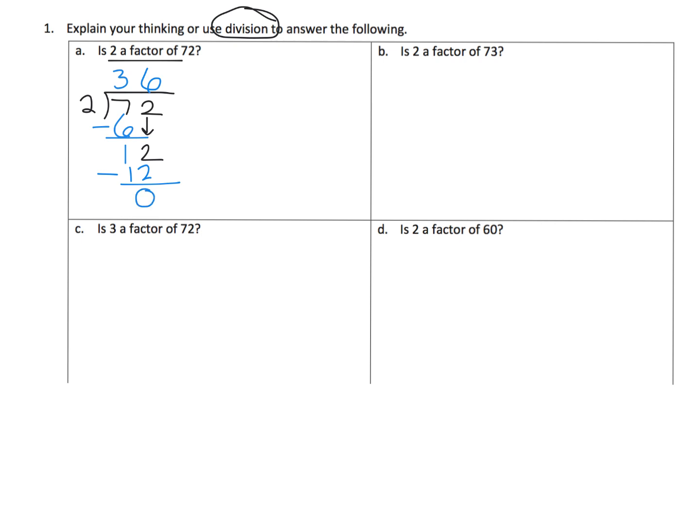Now, because we have a remainder of 0, that means, yes, 2 is a factor of 72.